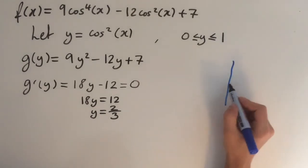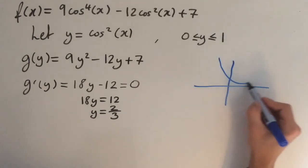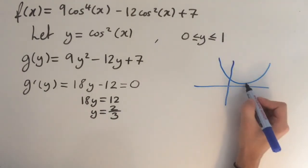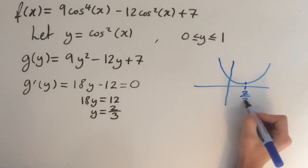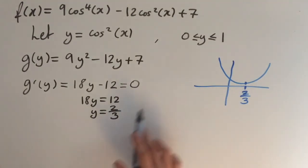By looking at the shape of this quadratic, we can deduce that this turning point is in fact a minimum point. And as two thirds lies in the range of 0 and 1, we know this is the value we're looking for.